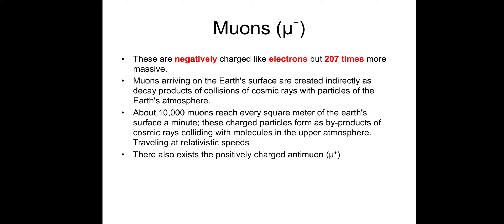There's also a positively charged anti-muon, muon plus. Muons are unstable and decay by the weak interaction into electrons and anti-neutrinos. Anti-muons decay into positrons and neutrinos. So muons decay into electrons and anti-neutrinos, while anti-muons decay into positrons and neutrinos. They're basically opposite of each other in how they decay.